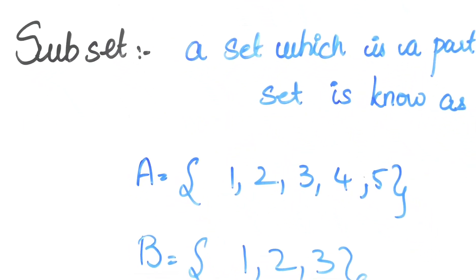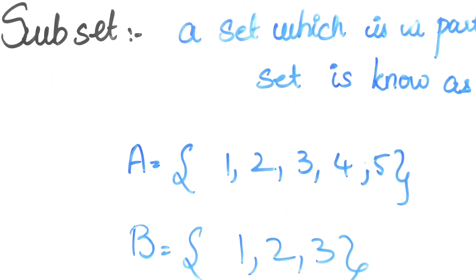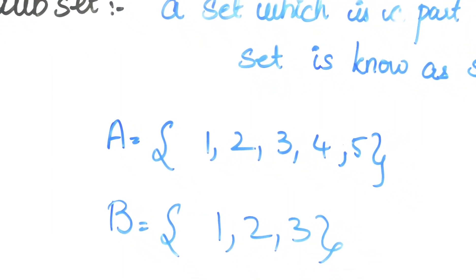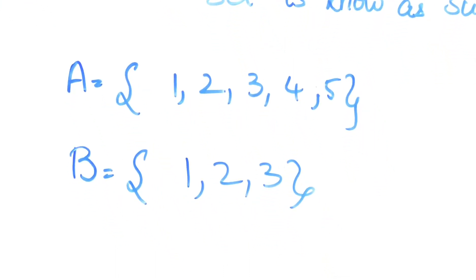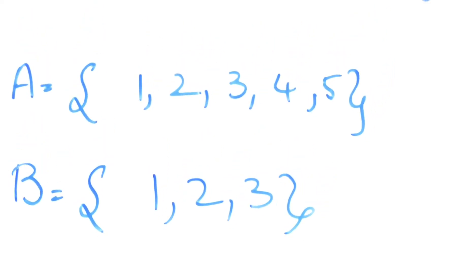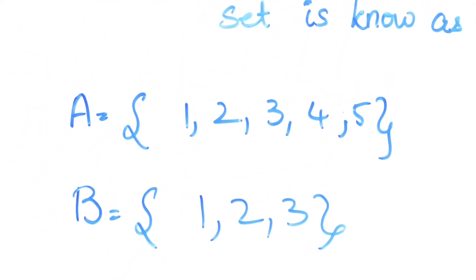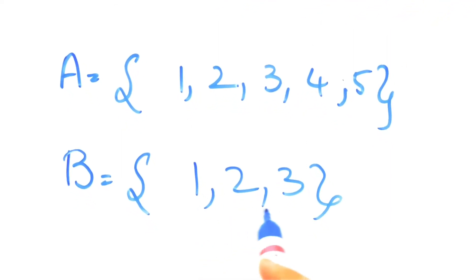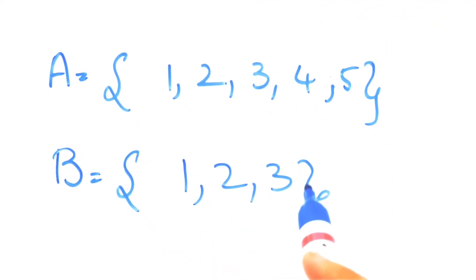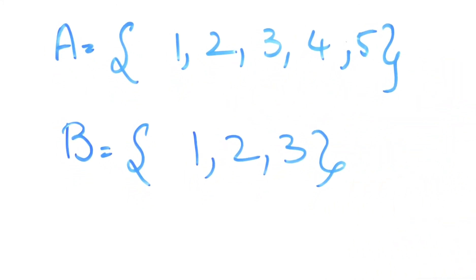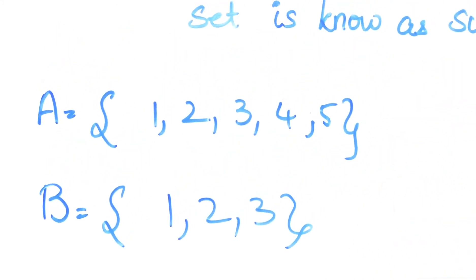The next thing we come to is called a subset. The name tells you something, right? It's a set and then I take a part of it and I call it as a subset. Suppose I write a set as 1, 2, 3, 4, 5. Then I take a part of it, that is 1, 2, 3. So 1, 2, 3 will be called as subset of 1, 2, 3, 4, 5. Nothing but a set in which subset is a part of.